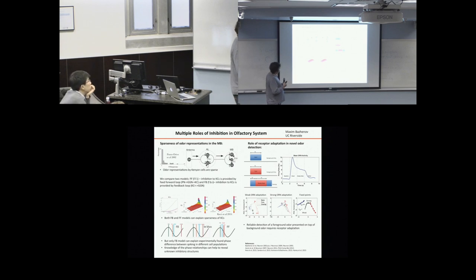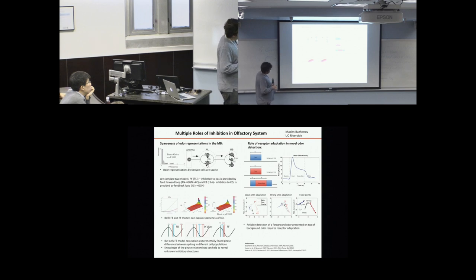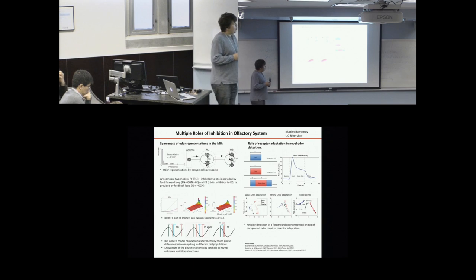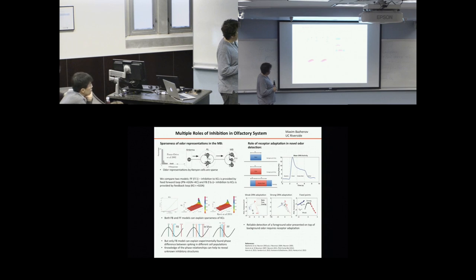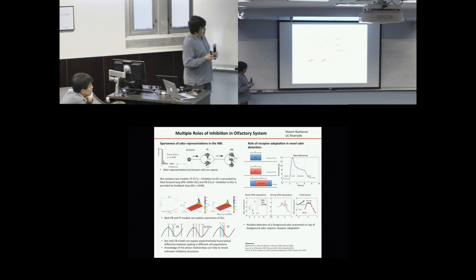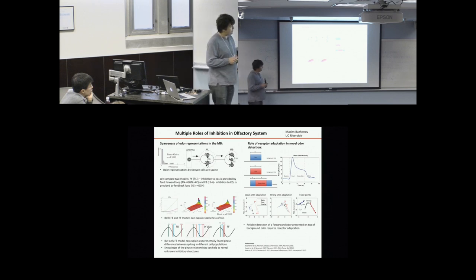It turned out that in locusts, this feedforward circuit might not exist; instead there is a different circuit mediated by giant GABAergic cells — feedback inhibition where Kenyon cells activate GGN and then it feeds back to KCs. In this study, we tried to compare the properties of one circuit versus another: can we distinguish between them? We found that both are perfectly capable of explaining sparseness — both can maintain a very low total number of spikes compared to when there is no inhibition. What was quite different between them is the relative phase of spiking in the KC, GGN, and LH populations.